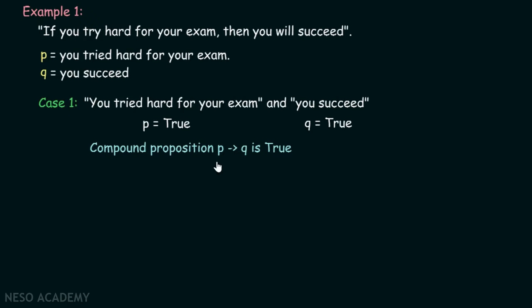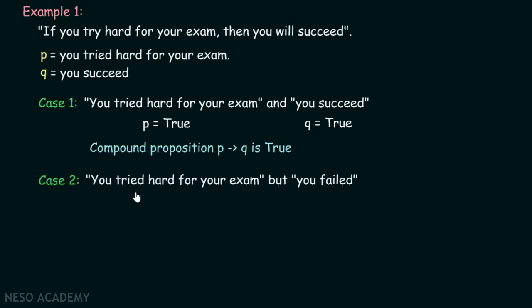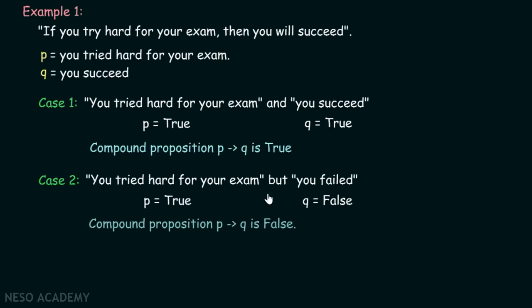Case two: you tried hard for your exam but you failed. You did a lot of hard work to prepare for the exam but finally you failed. This means P is true and Q is false, so the compound proposition becomes false. According to this statement, if you try hard then you will succeed — but here you tried hard and eventually failed, which means the argument is false.